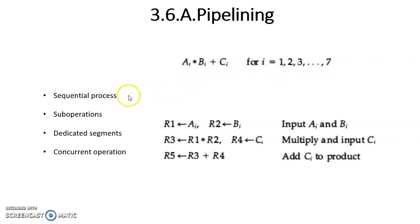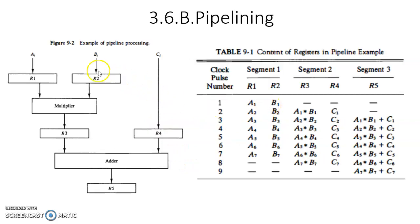Now, according to this pipeline technique, this sequential process is decomposed into various sub-operations. In the textbook, the author had decomposed this into 3 sub-operations. In the first sub-operation he is loading ai and bi into registers r1 and r2. In the second segment he is loading the result of this multiplier into r3, ci into r4. And in the last segment he is loading the result of adder into r5.